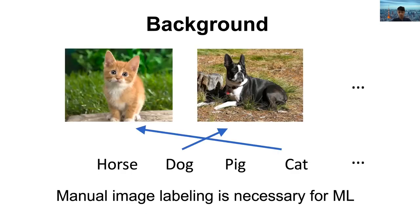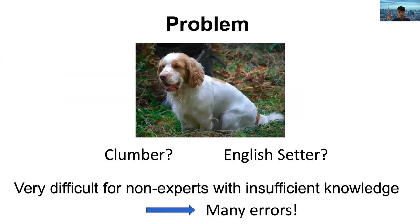Manual image labeling is necessary for machine learning. However, it is a labor-intensive process, and researchers often recruit non-expert annotators to do it. Image labeling by non-experts can be very difficult — such as selecting a dog breed label for a dog image — and may contain many errors because non-experts have insufficient domain knowledge.